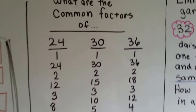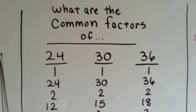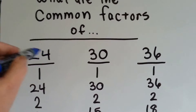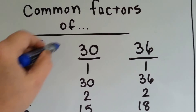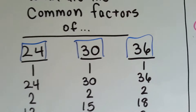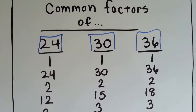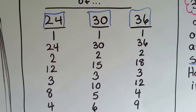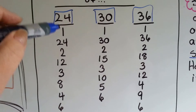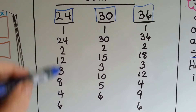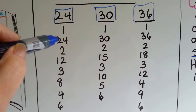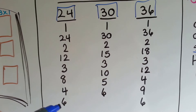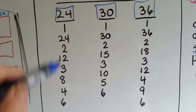Now let's figure out the common factors of 24, 30, and 36. It's almost like an exclusive club — only common factors are allowed in. We need all the numbers we can multiply together to get 24: 1 times 24, 2 times 12, 3 times 8, and 4 times 6. Those are all the factors of 24.